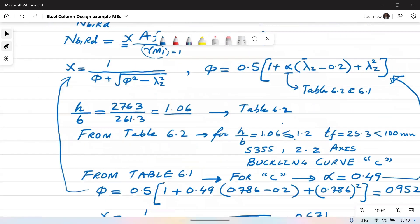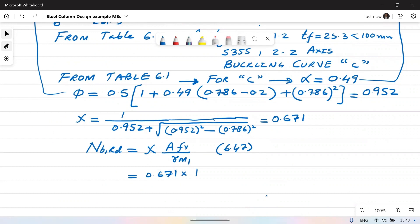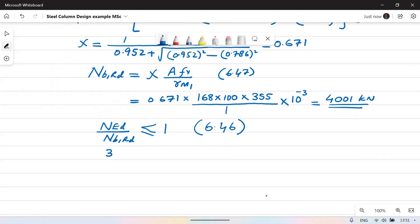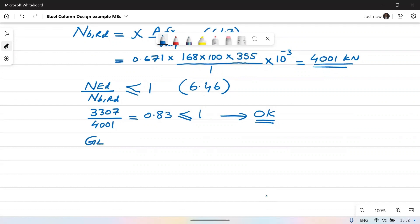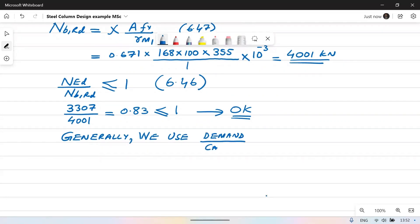N_B,RD is chi times A times F_Y over gamma_M1. 0.671 times 168 times 355 we get 4000 kilonewtons. Then we work out N_ED over N_B,RD which comes out to be 0.83 which is less than 1. This means that section provided is all right. Normally we use demand versus capacity between 0.85 to 0.9.